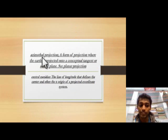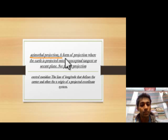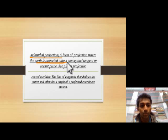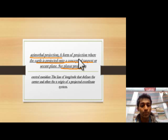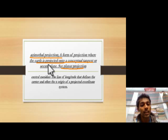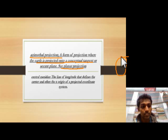Now we describe the azimuthal projection. The azimuthal projection is a form of projection where the Earth is projected onto a conceptual tangent or secant plane.